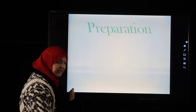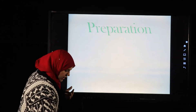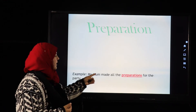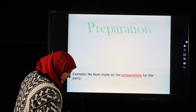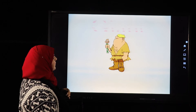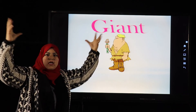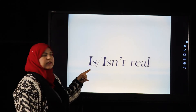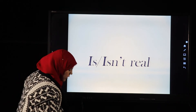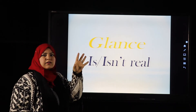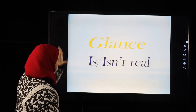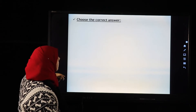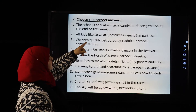The next word is 'preparation,' which comes from the verb 'prepare.' Example: My mom made all the preparations for the party — she made the cake and the party hats. The next word is 'giant,' meaning very, very big. The next word is 'glance,' meaning something that happens very quickly — a quick look.